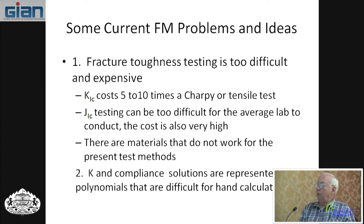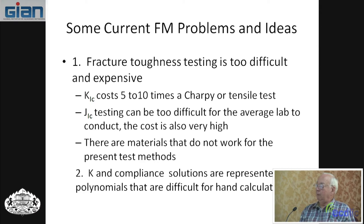I want to bring up some new work and problems you may have been aware of as we went along. One issue is fracture toughness testing — it's too difficult and expensive for a lot of people. For example, a K1C test might cost five or ten times what a Charpy test or Tencel test costs. J1C testing is very difficult to do and to analyze, and some average labs just can't do it. The best thing if you're not set up for that is to send it to an outside lab that specializes in J1C testing, but that can be expensive.